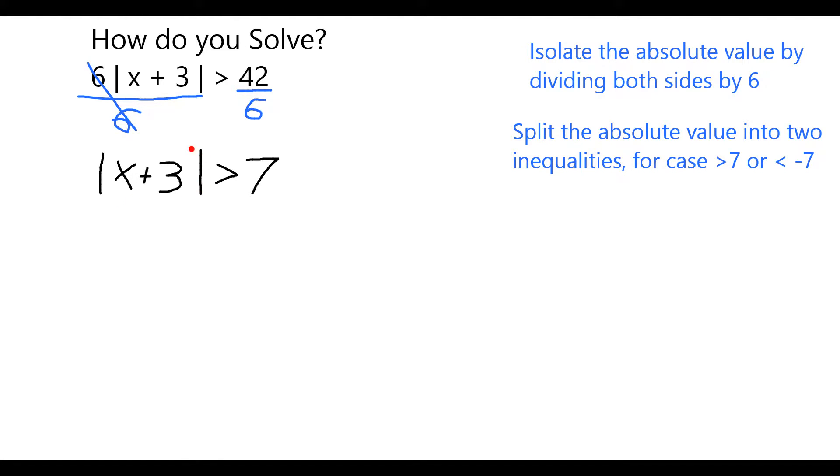Now that we have the absolute value part by itself let's think about what that means. Whatever is in the absolute value, in order for it to be greater than 7, this thing has to be greater than 7 or alternatively this whole thing has to be less than negative 7, because for example if you were to take the absolute value of negative 8 that would be positive 8 which is greater than 7.